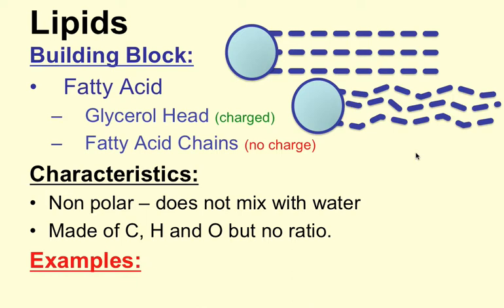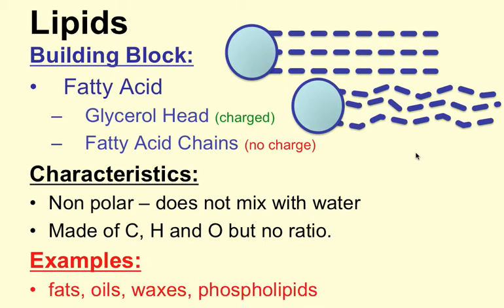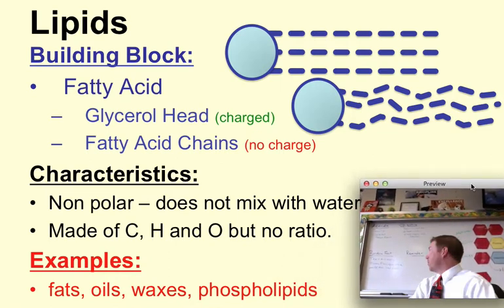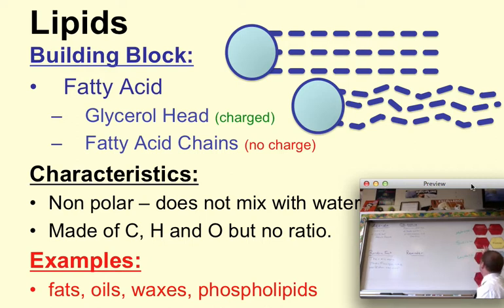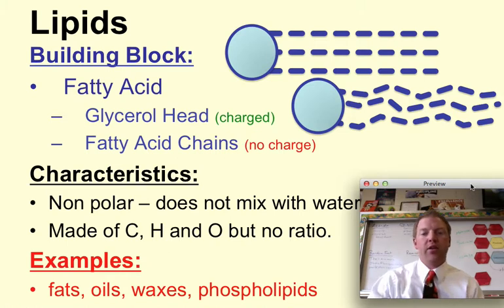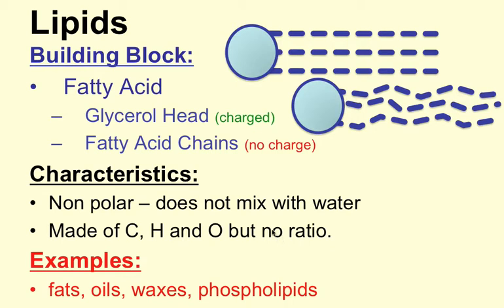Lipids are made of carbon, hydrogen, and oxygen — just like carbohydrates — but they're in no fixed ratio. These are fats, oils, waxes, and phospholipids, and they're used for energy storage. That means these fats are made out of whatever we use for energy, which is carbohydrates. Carbohydrates are made of carbon, hydrogen, and oxygen, so these must be made out of the same type of thing. Whatever we don't use from our sugars — glucoses, fructose, and so on — gets stored in our muscles as glycogen, and anything extra we store as fat for later. There's no ratio like C6H12O6; it's just C's, H's, and O's.